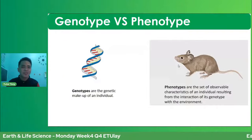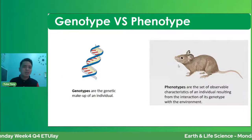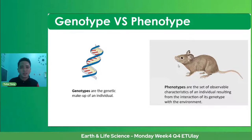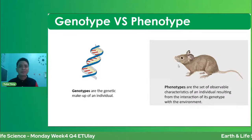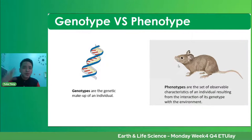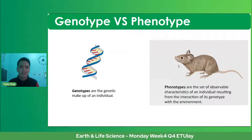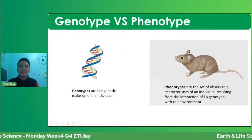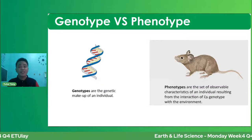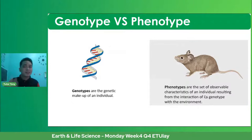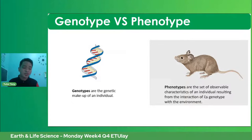We'll also be using the terms genotype and phenotype. Pag genotype, we'll be dealing with the genetic makeup of the individual — the DNA and genes on the molecular level. Pag phenotype naman, ito yung minamanifest na anong klaseng genes ang meron ng isang individual — the morphology or physical appearance. Phenotypes are the set of observable characteristics of an individual resulting from the interaction of its genotype with the environment. Genotype refers to the genes; phenotype is the physical appearance or morphology of the organism.